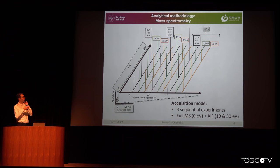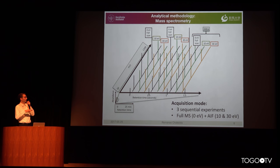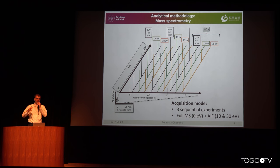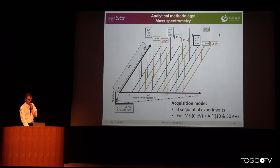On the mass spectrometry side we use three sequential experiments — three scans. We have one full MS scan at zero electron volts, then a second all-ion fragmentation scan at 10 electron volts, and another at 30 electron volts. During all-ion fragmentation we take all molecules eluting at the time and break them down in the mass spectrometer to get the spectrum.